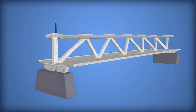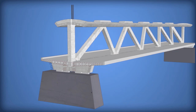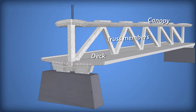The concrete for this section was poured in three stages: first the deck, then the vertical and diagonal truss members, and finally the canopy. Separate pours formed discontinuities in concrete structures called cold joints. In this bridge, cold joints were located between the deck and the truss members, and between the truss members and the canopy.